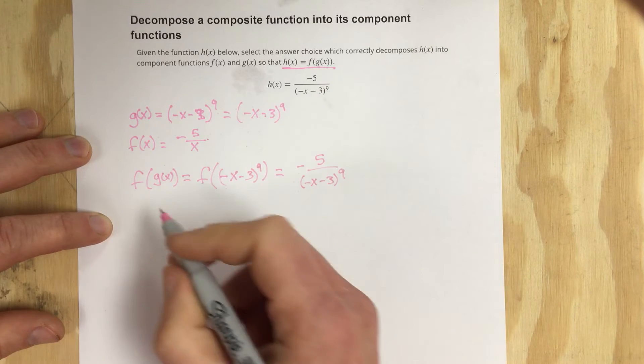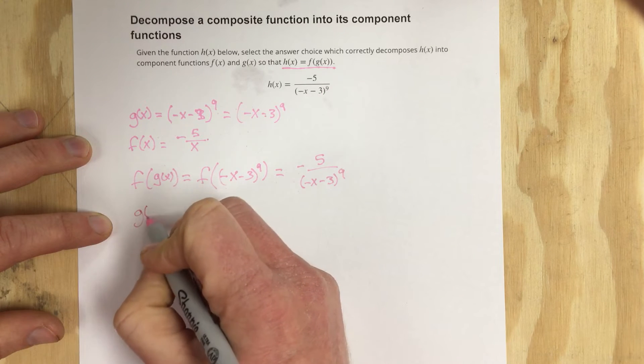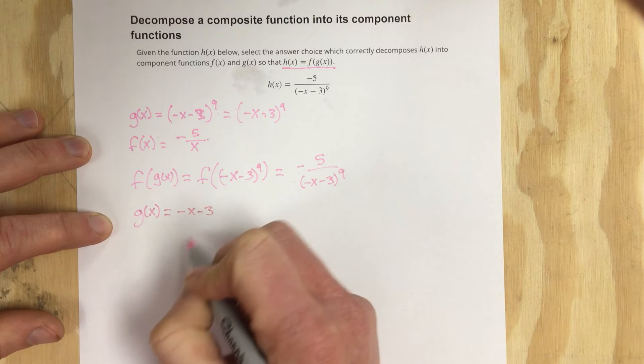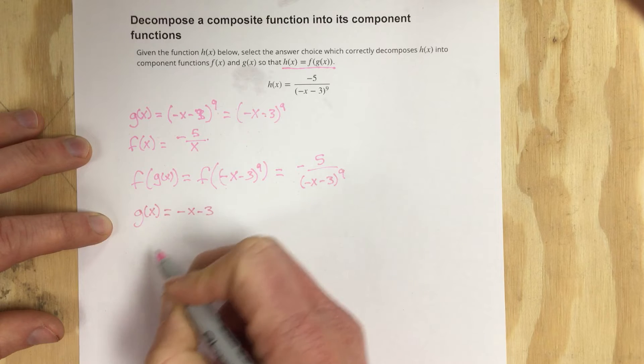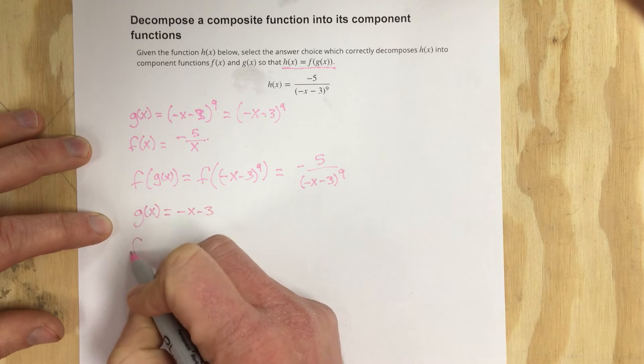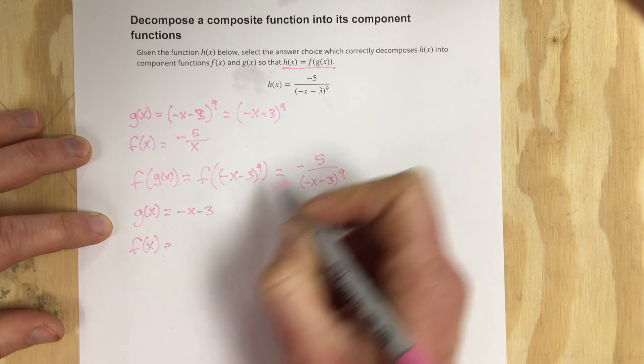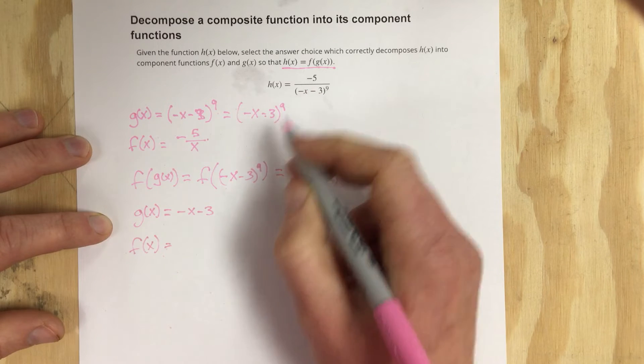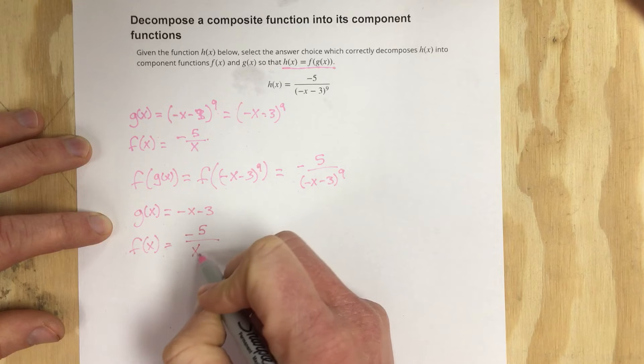Another option would be if I say g of x is going to equal negative x minus 3. That would then mean f of x would have to equal, so basically replace negative x minus 3 with x here, and that would be negative 5 over x to the 9th.